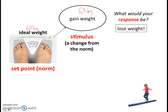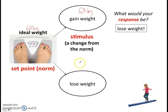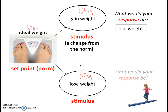Now let's think about the reverse situation. Let's say I go to a camp for a long time and don't get much food to eat, so I end up losing weight. I come back home and find that my weight is 57 kilograms. We can also call this a stimulus because it is a change from the norm — this time a decrease from the norm. My response would be to gain back that weight. I would eat properly over the next few days to come back again to my ideal weight.